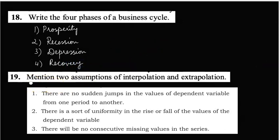Nineteenth question: mention two assumptions of interpolation and extrapolation. There are three assumptions; out of these you can write any two. First: there are no sudden jumps in the values of the dependent variable from one period to another. Second: there is a sort of uniformity in the rise or fall of the values of the dependent variable. Third: there will be no consecutive missing values in the series.